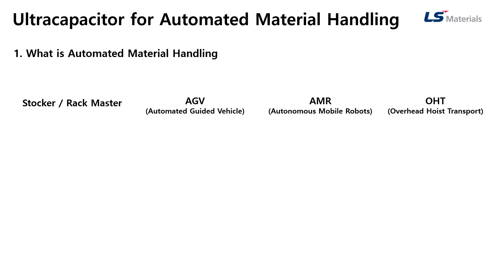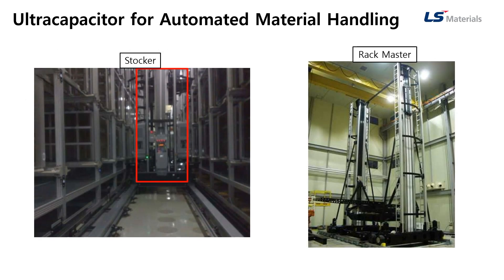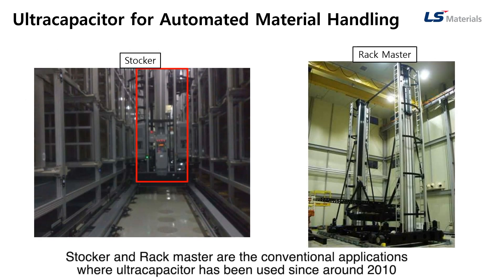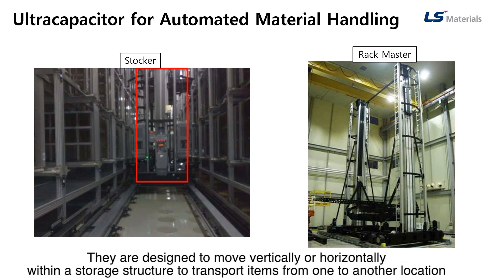These four are the major applications for this area. Let me show you some pictures of what they are. Stacker and RecMaster are the conventional applications where Ultra Capacitor has been used since around 2010. They are designed to move vertically or horizontally within a storage structure to transport items from one location to another.